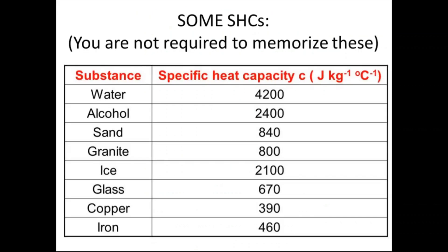A few specific heat capacities that you should know about but are not required to memorize are in this table. One of the most commonly used ones is the specific heat capacity of water, which is 4200 joules per kilogram degree Celsius.